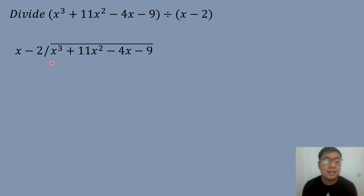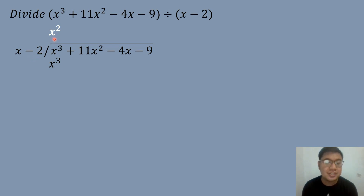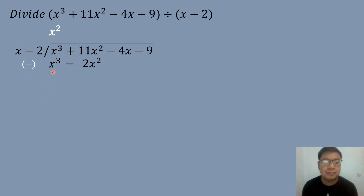Then you will divide the first term of the dividend by the first term of the divisor. So X cubed divided by X will be X squared. Then you will multiply X squared by the first term of the divisor: X squared times X equals X to the third power. And multiply X squared by the second term of the divisor: X squared times negative 2 equals negative 2X squared. Then we subtract: X to the third power minus X to the third power equals 0, canceled out. Negative times negative will be positive, so 11X squared plus 2X squared equals 13X squared.